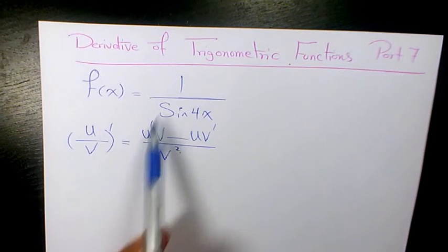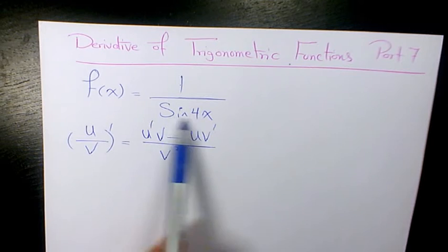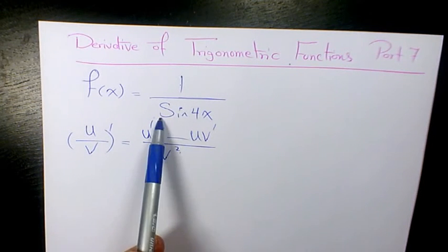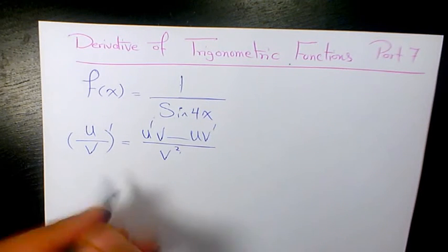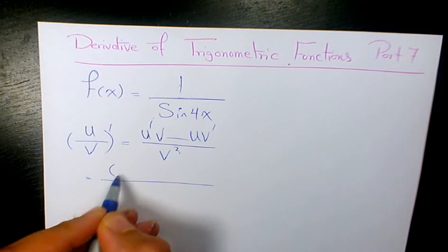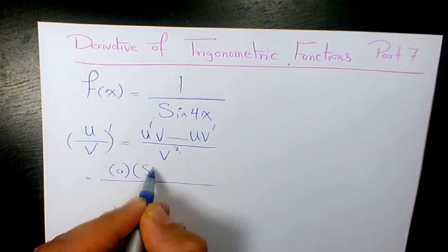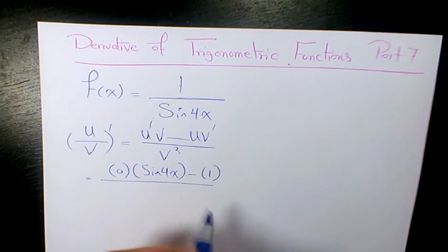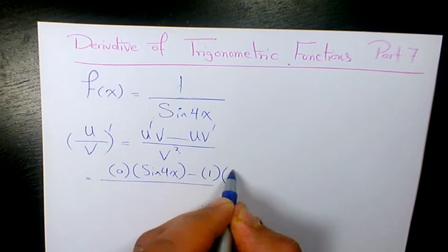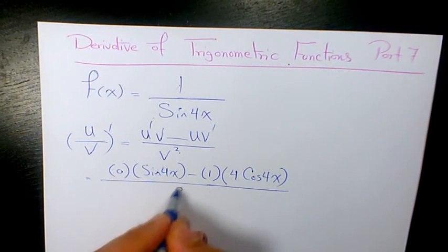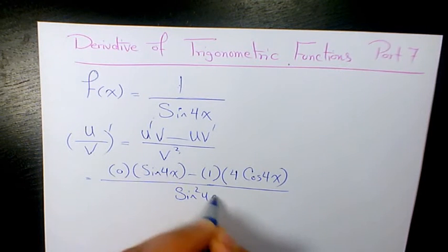It means that the derivative of the numerator times the original of the denominator minus numerator times the derivative of the denominator divided by denominator squared. The derivative of 1 is going to be 0 times sin 4x minus 1 times the derivative of the denominator, which is 4 cosine 4x divided by sin squared 4x.